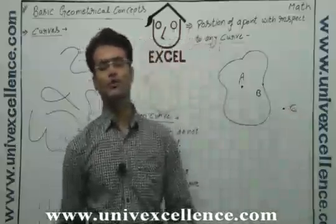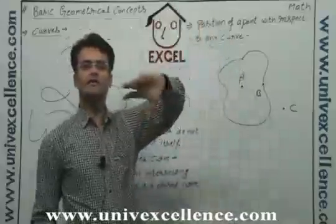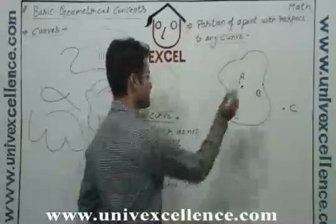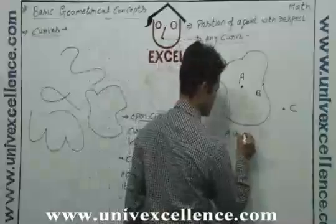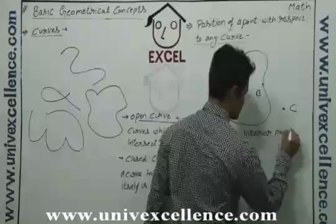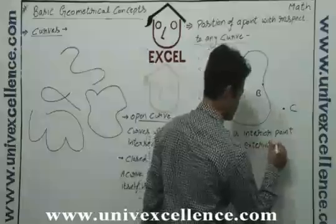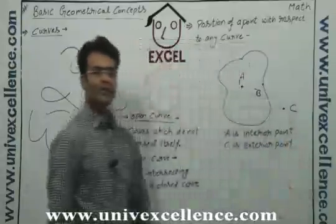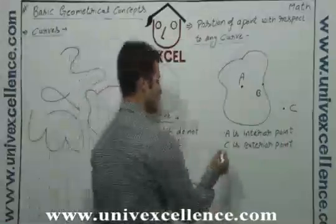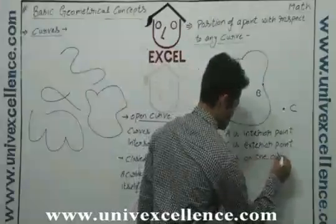This is point C. Now what are the positions of points A, B, and C with respect to the curve? We can see A is inside the curve, C is outside the curve, and B is on the edge of the curve. So here we can write: A is an interior point, C is an exterior point — exterior means it is in an external region, interior means it is in an internal region — and point B is on the curve.